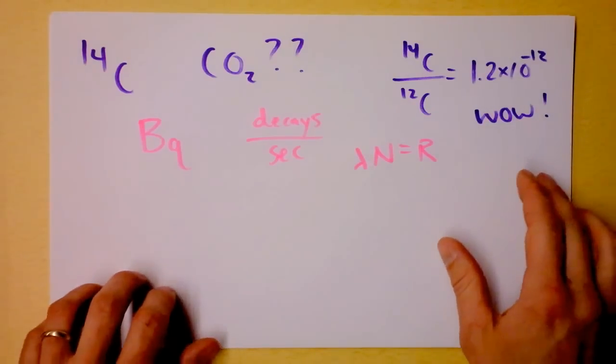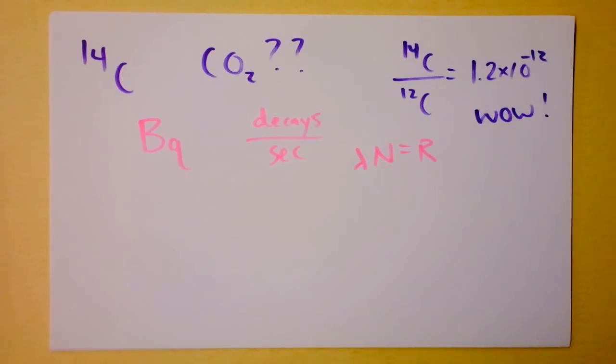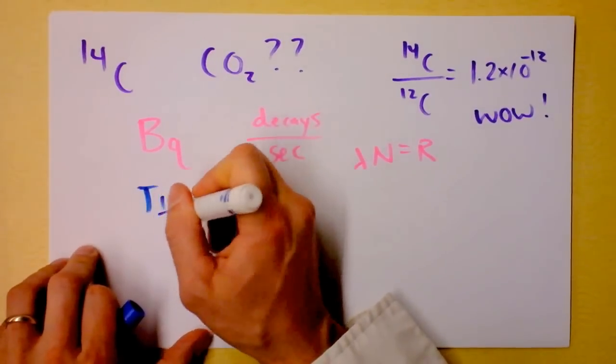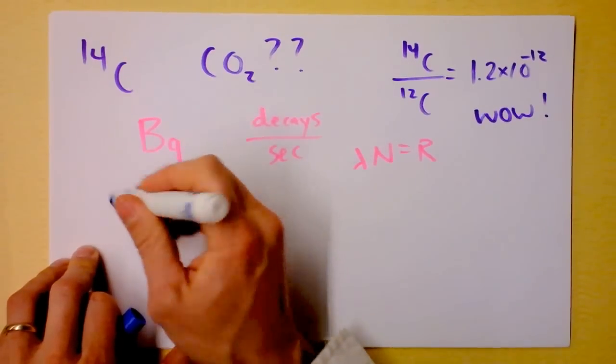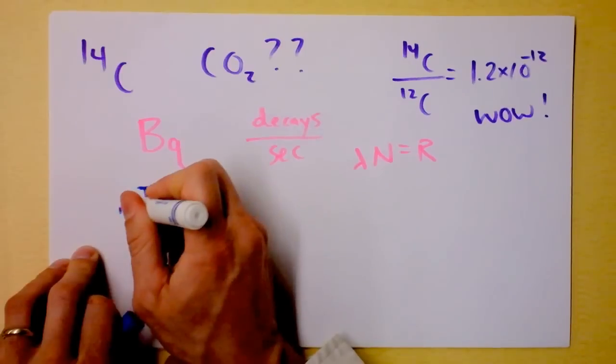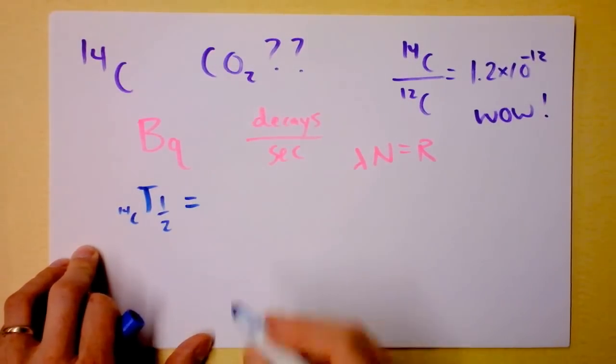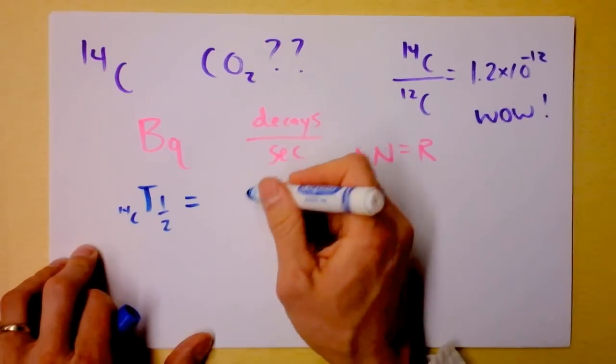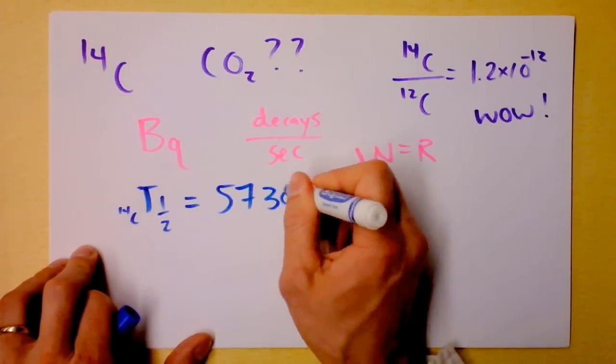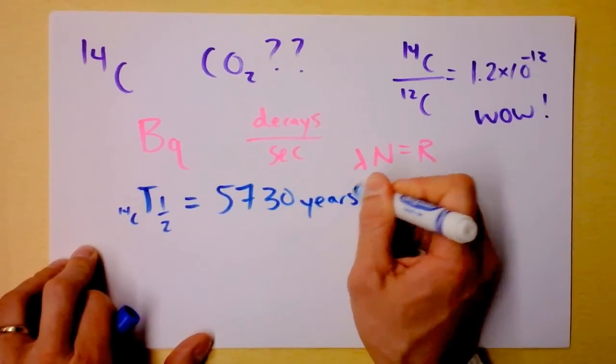Next up, we need to know the half-life. T one-half of carbon-14 is 5,730 years. Wow.